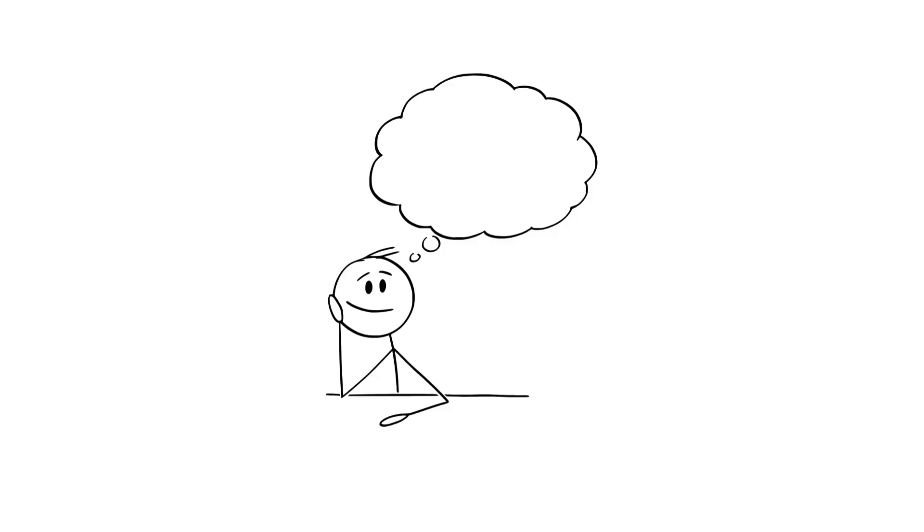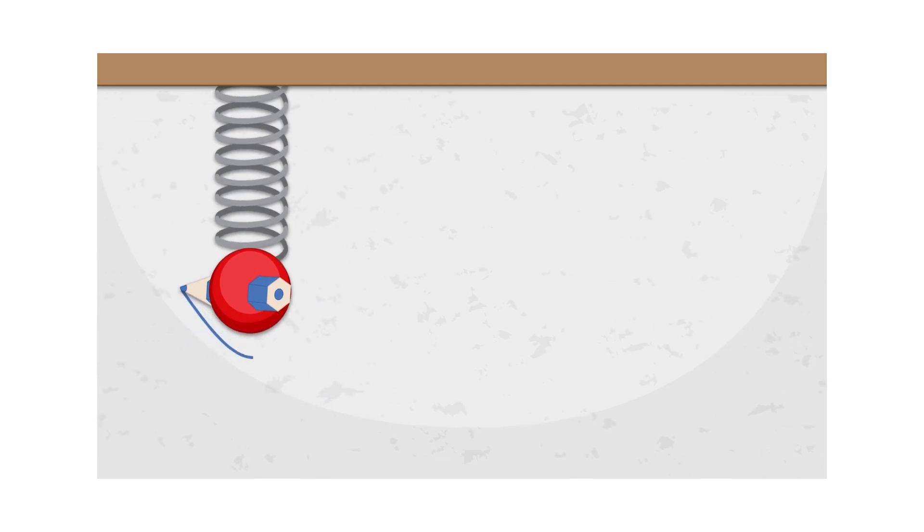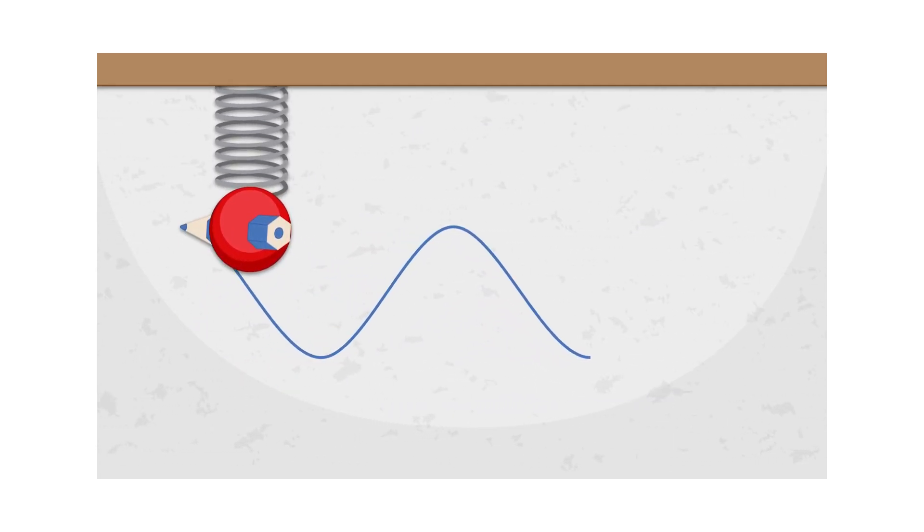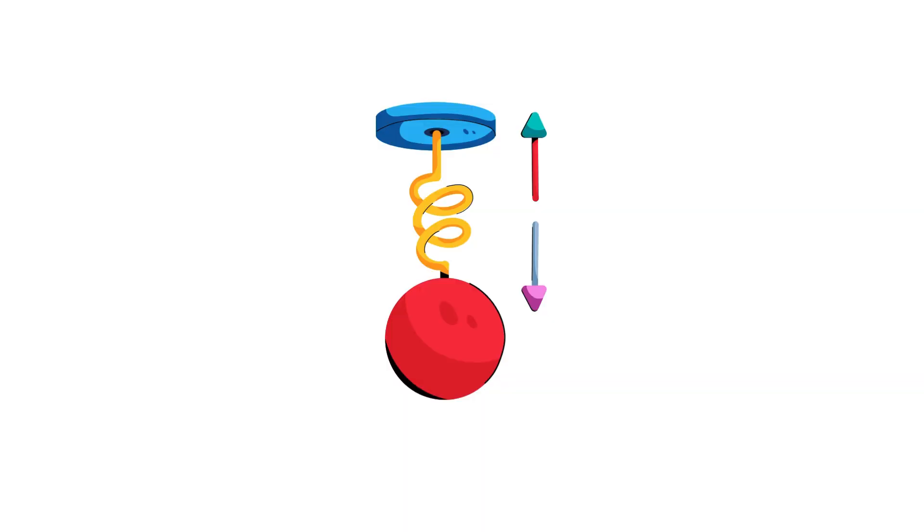To help you imagine this, think of an oscillating spring that alternately pushes and pulls on a particle as it compresses and extends. In this analogy, the spring is the alternating voltage source.